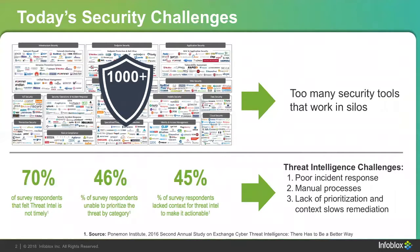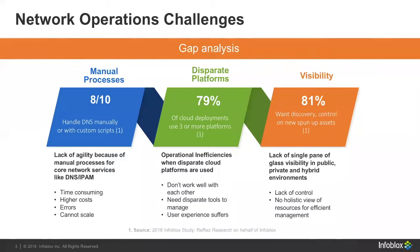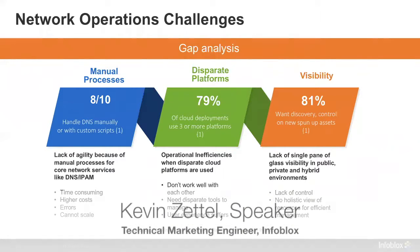You need to pick and choose which ones you want, and there are a lot of different types of security threats out there requiring different vendors. Network teams were having problems with manual processes, disparate platforms not really working together, and a lack of visibility between those platforms — not being able to see everything at once. This is a problem that the ecosystem approach helps with.